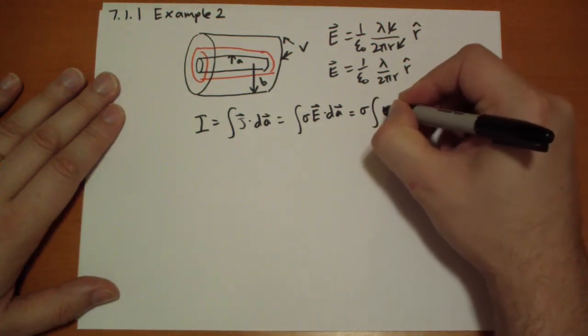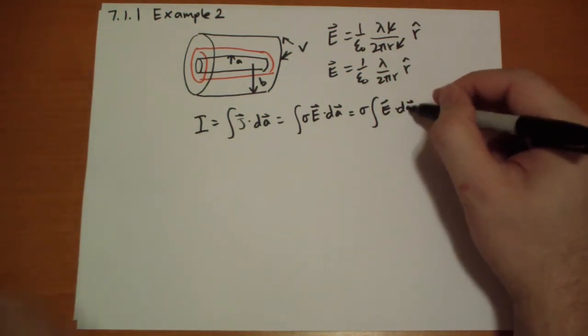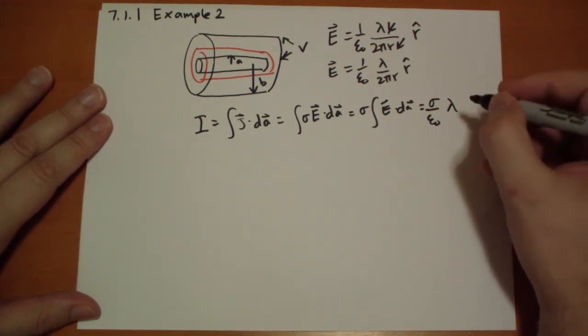That's sigma times the integral E vector dot dA. And we've actually already solved it with Gauss's law here. This is just the charge enclosed. This is sigma over epsilon naught lambda times the length.